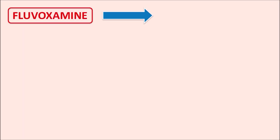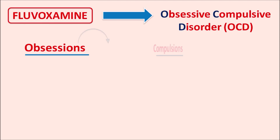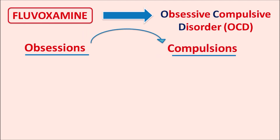Fluvoxamine is particularly used as an antidepressant in the treatment of obsessive compulsive disorder (OCD). In patients with OCD, we can observe repeated thoughts and actions which are associated with fear — these are the obsessions.